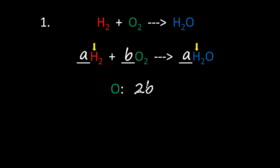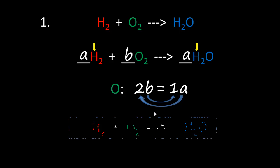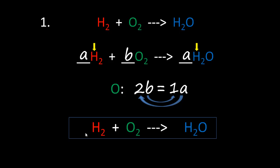In step three, we balance the remaining unbalanced element: oxygen. We have 2b oxygen atoms on one side, equal to 1a on the other side. This is already the simplest equation, so no need to simplify. From this equation, b equals 1 and a equals 2. In step four, we substitute: since a is 2, we write 2 here; since b is 1, we write nothing. The equation is balanced.